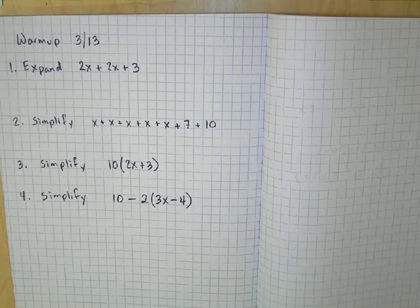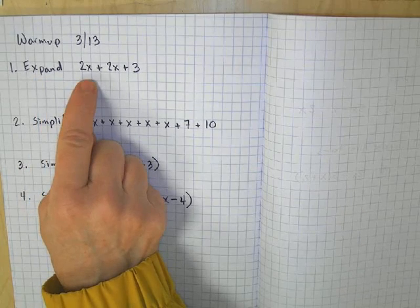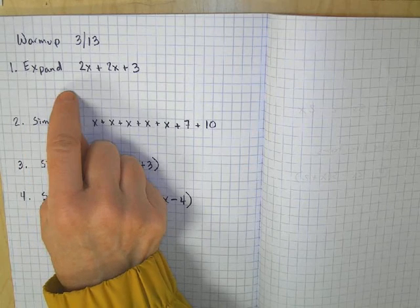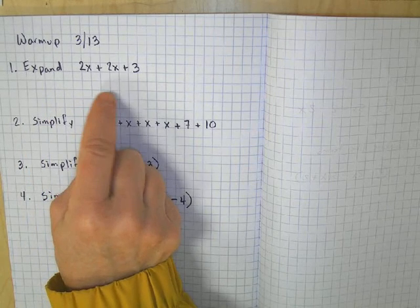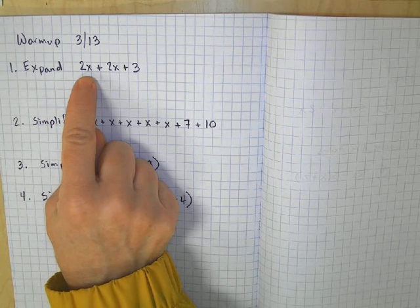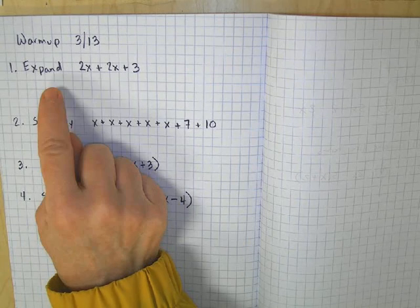Notice we have four problems. The first one says to expand, so that's where I want you to take these terms and write them out as individually as you can. For example, 2x is going to become x plus x. So you're going to expand this one.